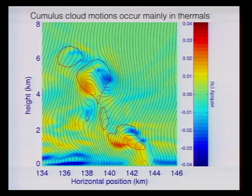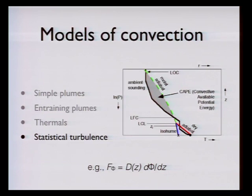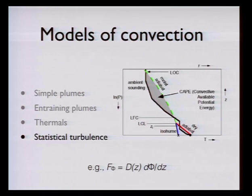The last step in thinking about how to model convection is to dispense with plumes entirely and model it statistically as a fully developed turbulent flow — which is typically done in the boundary layer. The simplest way is a Fickian diffusion law: things diffuse down the gradient with a diffusion rate that increases as you get farther from the surface. People are starting to use models like this even for deep convection, and it doesn't actually work so badly.